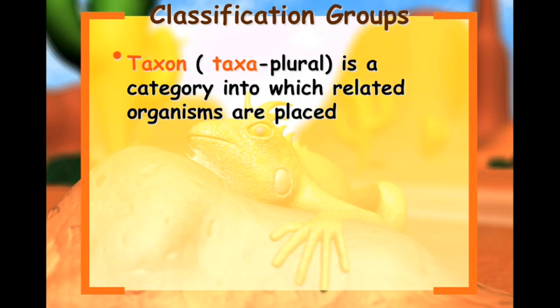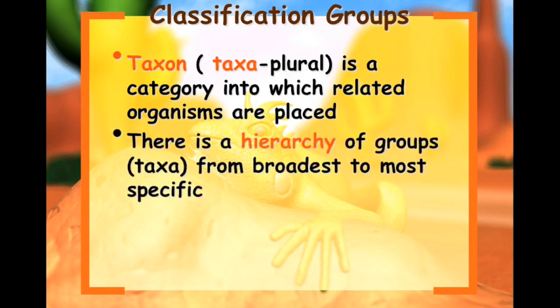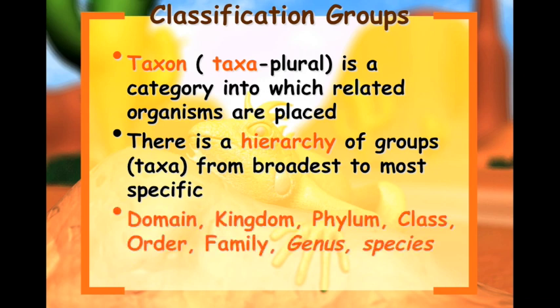Classification groups: a taxon, or taxa for plural, is a category into which related organisms are placed. There is a hierarchy of groups from broadest to most specific. We go domain, kingdom, phylum, class, order, family, genus, species.